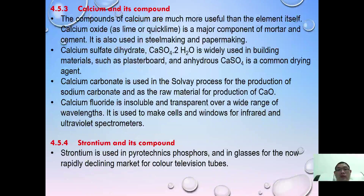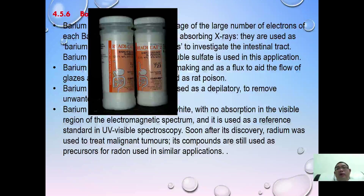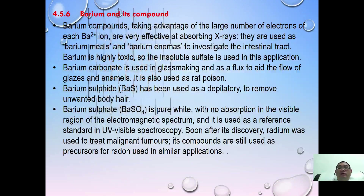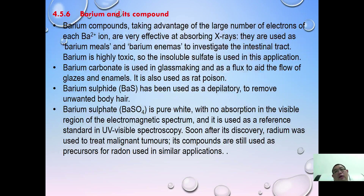Strontium does not have many applications — it was used in television tubes, but those are rarely used anymore. Finally, barium is most notably used in barium meal for X-ray treatment of the intestine. Patients with intestinal problems are given barium meal and then undergo an X-ray, where problem areas appear as white spots.